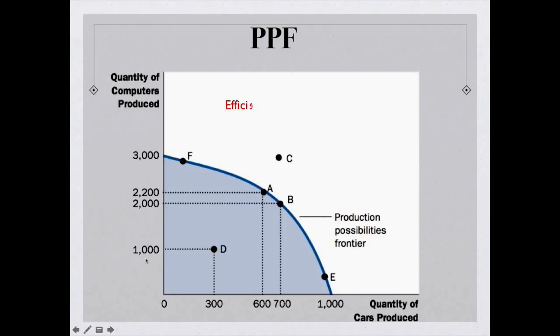Now, on the production possibilities frontier, if my economy spent its entire time making just computers, they could produce 3,000 computers, but at the same time, they could produce zero cars. So computers are on one axis, cars are on the other axis. If, on the other hand, my economy spent all of its time producing cars, that would be this point out here, they could produce 1,000 cars, but they could produce zero computers.